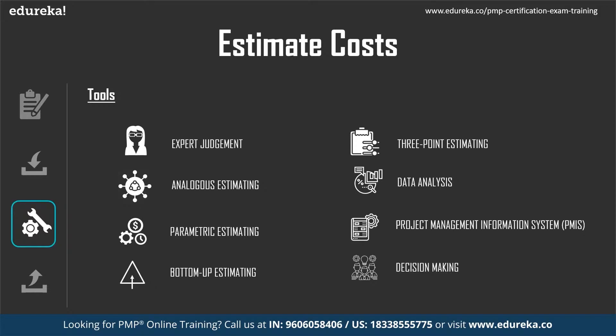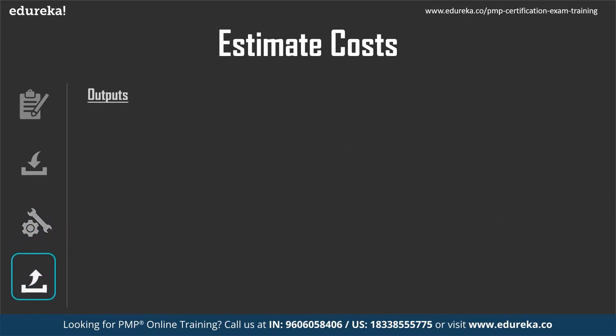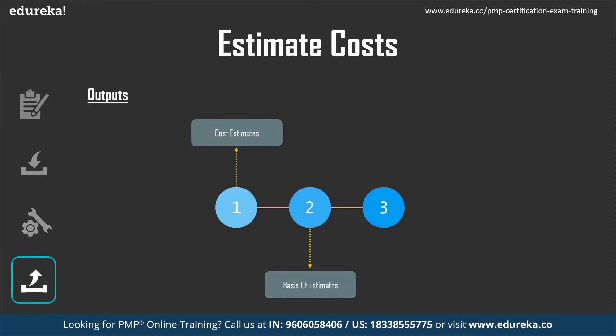Decision making techniques involve various experts, people involved in delivery, those who understand the technology and the dynamics of the project, facilitating discussions to make decisions. Outputs of the estimate cost process include cost estimates, basis of estimates — which justifies why a particular activity is estimated at a certain amount — and project document updates.